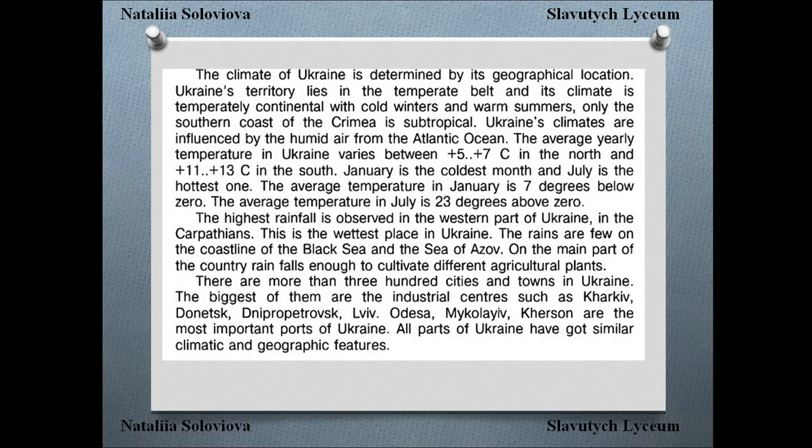On the main part of the country, rain falls enough to cultivate different agricultural plants. There are more than 300 cities and towns in Ukraine. The biggest of them are industrial centers such as Kharkiv, Donetsk, Dnipropetrovsk, Lviv, Odessa, Mykolaiv, and Kherson. However, all parts of Ukraine have similar climatic and geographic features.